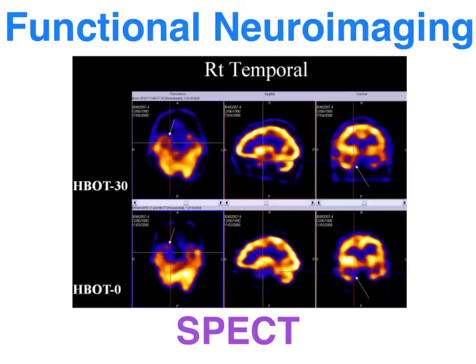This is Part 2 of the two neuroimaging clips. We're going to describe how functional neuroimaging gathers its neurological information, and we're going to look at advantages and disadvantages. We'll start with the SPECT.